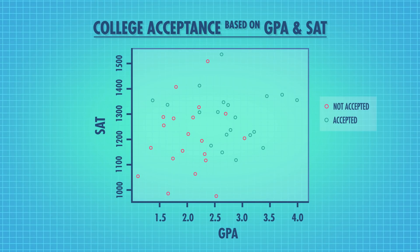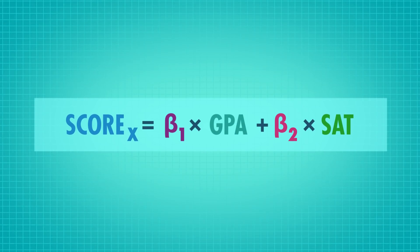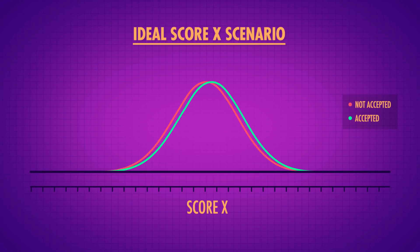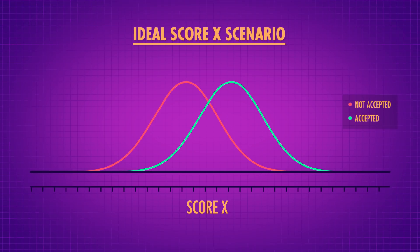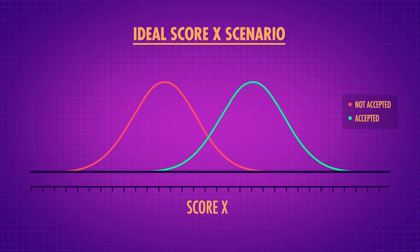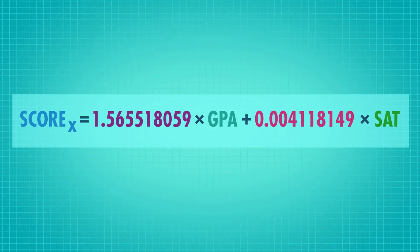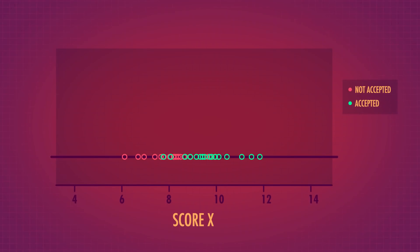But GPA isn't everything. What if we looked at SAT scores as well? Looking at distributions of both GPA and SAT scores together gets more complicated, and this is where LDA becomes really helpful. We create a score — Score X — that's a linear combination of GPA and SAT scores. The computer makes it so that the Score X value of admitted students is as different as possible from those who weren't admitted. This special way of combining variables to maximally separate the two groups is what makes LDA really special. We can take the scatter plot of both variables and change it into a one-dimensional graph of just Score X.